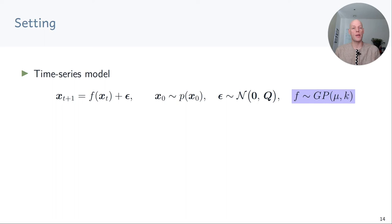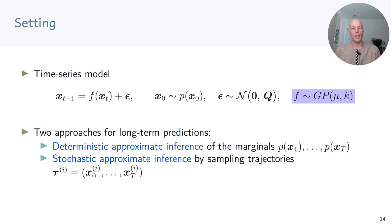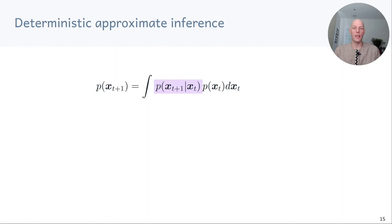Therefore we now have to account for model uncertainty as well when we make predictions. We'll again look at two approaches: deterministic approximate inference, where we iteratively determine the marginal distributions of future states, and stochastic approximate inference where we obtain trajectory samples. When we compute the next state distribution we need to compute the integral of the next state distribution conditioned on the current state and integrate out the current state — this integral is exactly the same one we already looked at before.